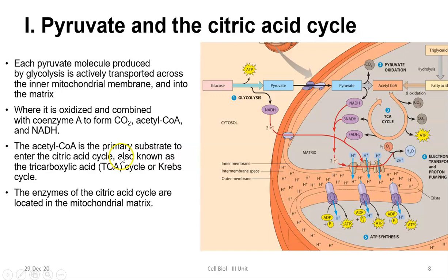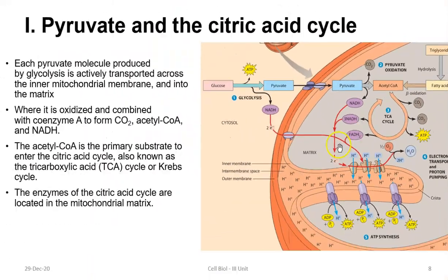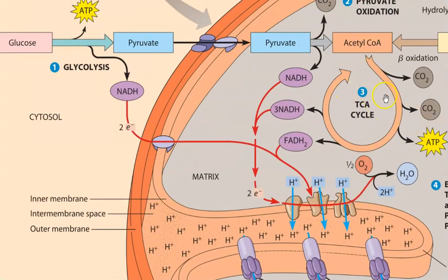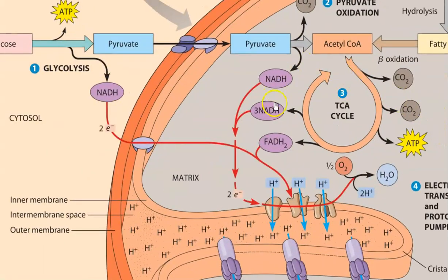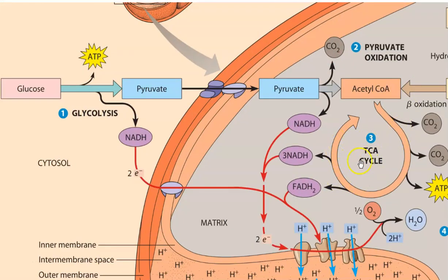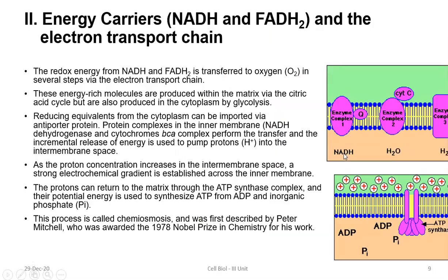Acetyl-CoA serves as the primary substrate for the TCA cycle. The TCA cycle, also called the citric acid cycle or Krebs cycle, takes place in the matrix of the mitochondria. The enzymes of this cycle are all located in the mitochondrial matrix, as shown here. These are the points related to pyruvate oxidation and citric acid cycle functioning.